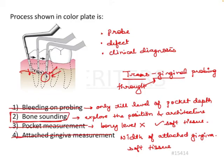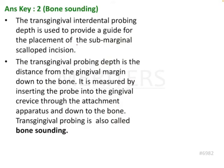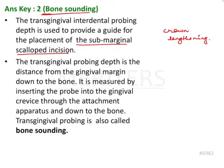Transgingival probing or bone sounding is the correct answer. The transgingival interdental probing depth is used to provide a guide for the placement of the subgingival scalloped incision during surgical procedures. It is also important for crown lengthening procedures to see where the bone is present so that the biologic width can be maintained — whether crown lengthening is done with or without osseous reduction depends on bone sounding.